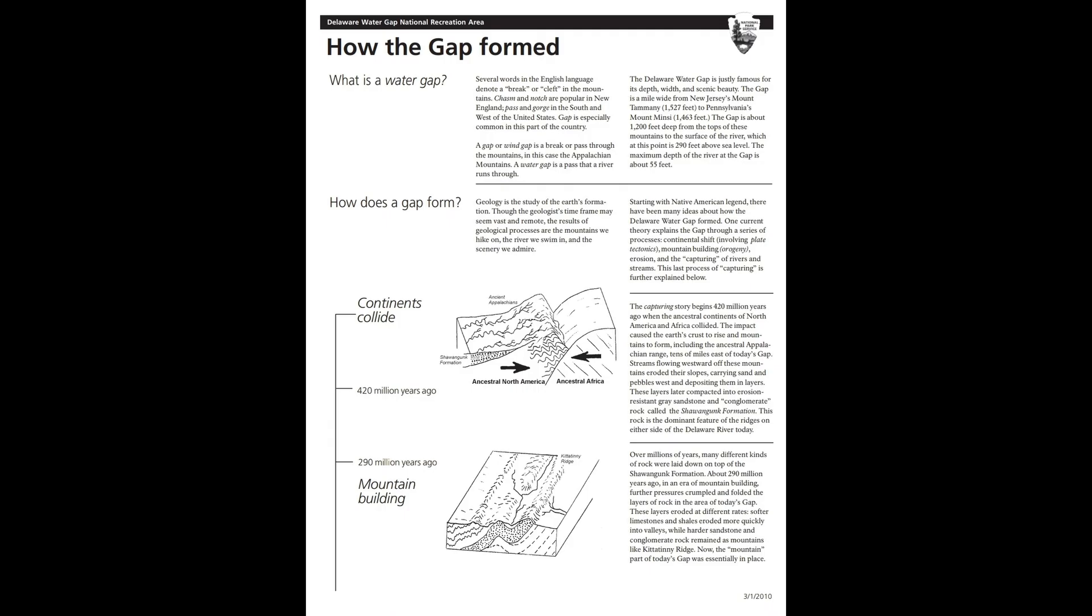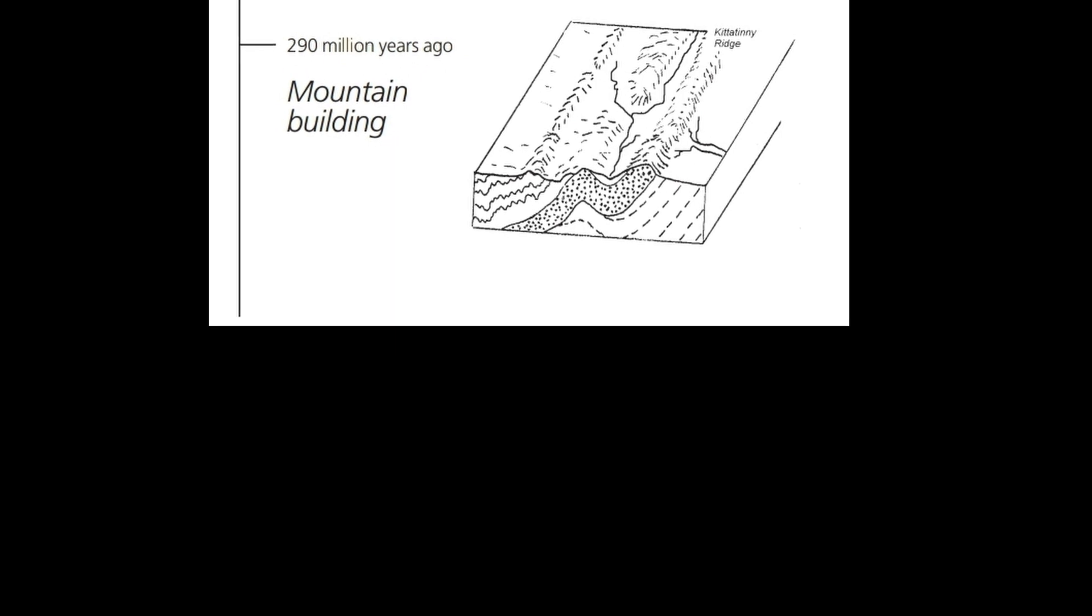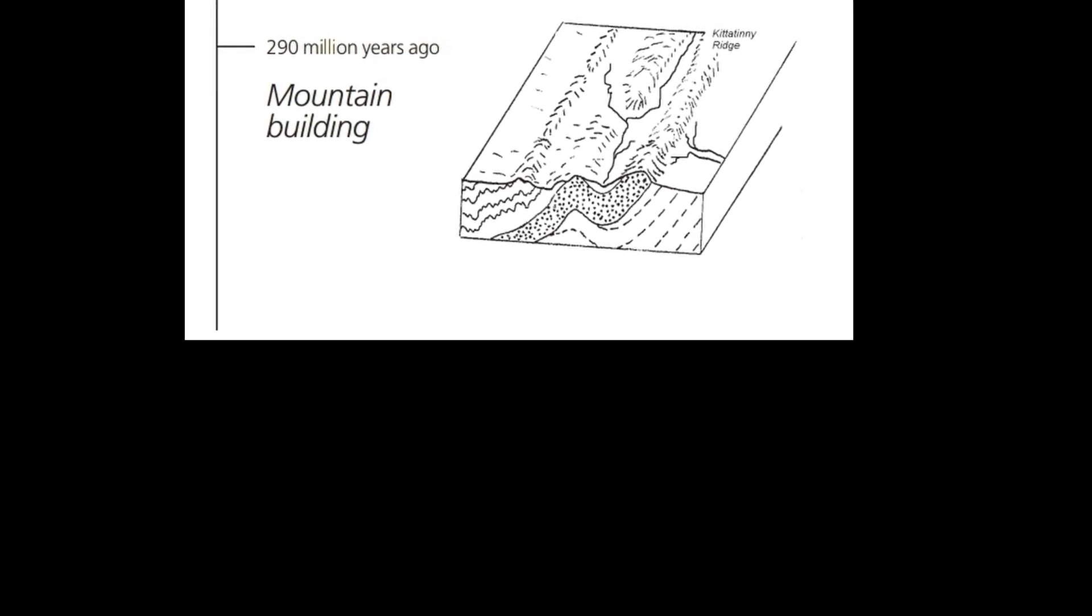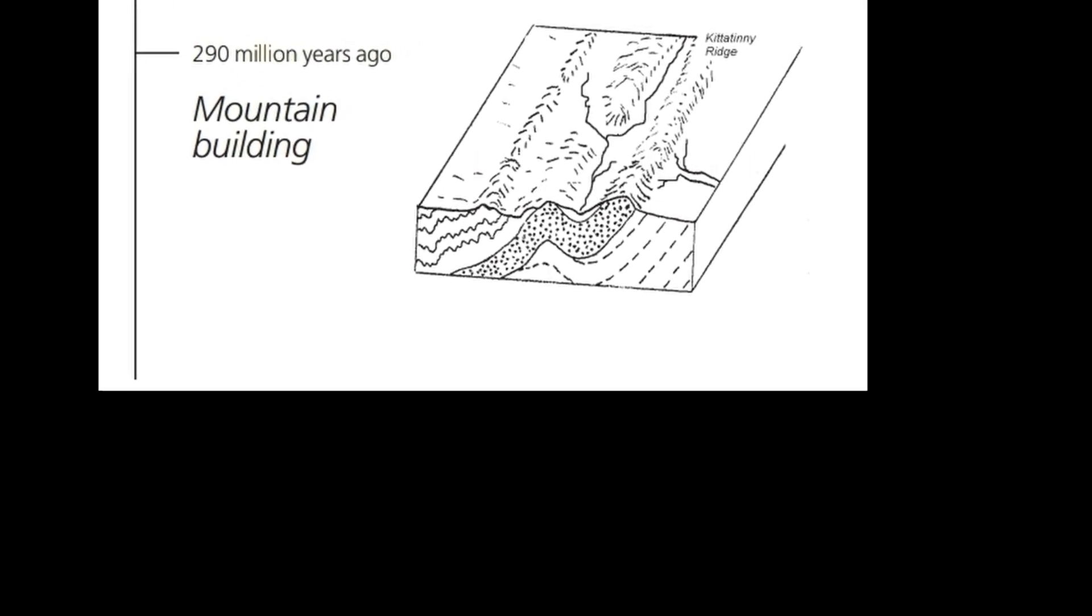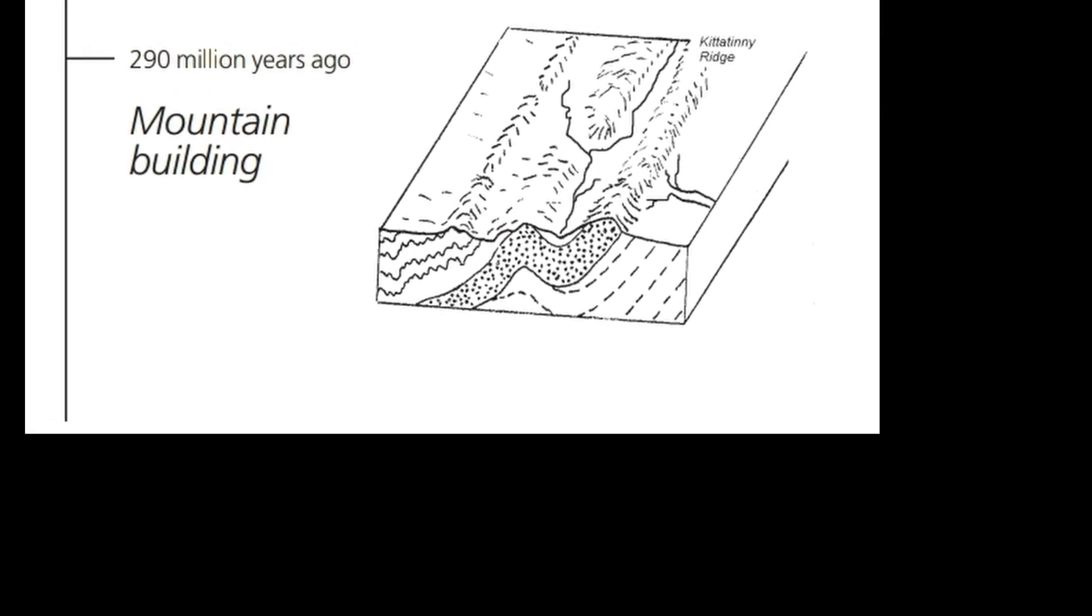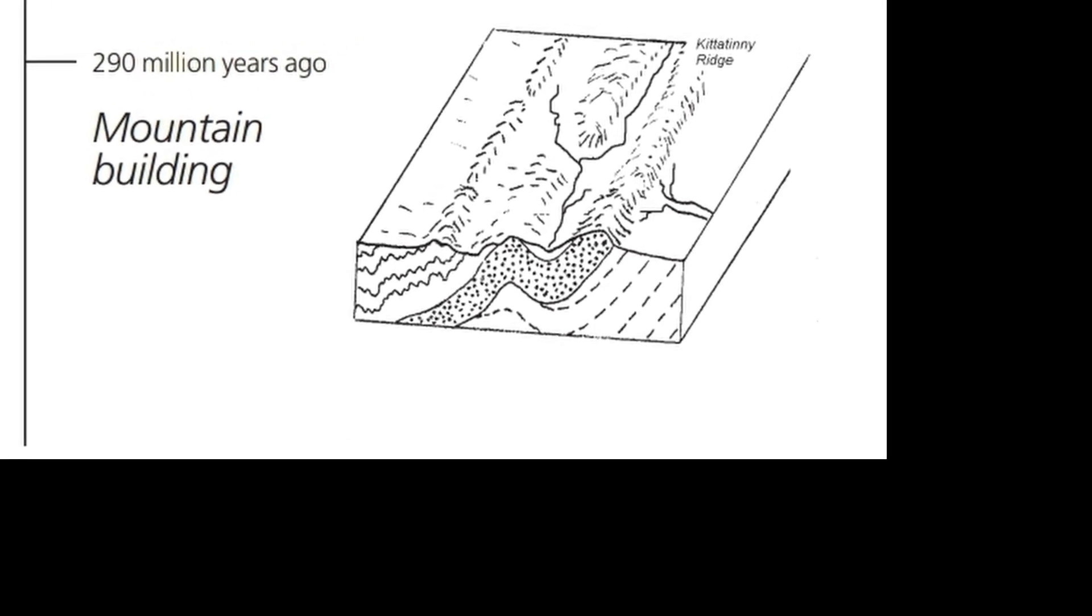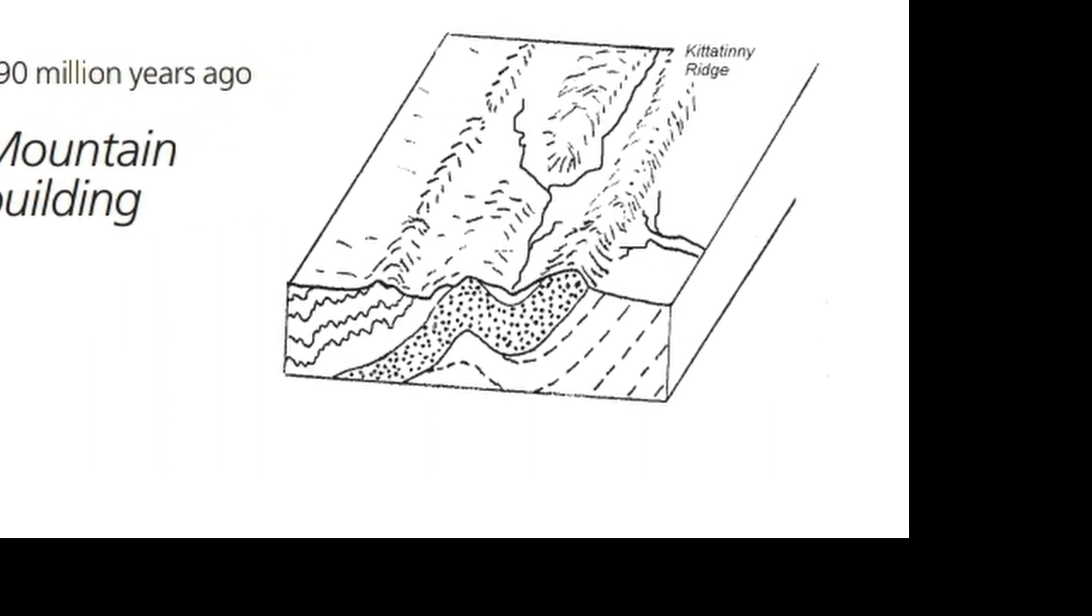Over millions of years, many different kinds of rock were laid down on top of the Shawangunk formation. About 290 million years ago, in an era of mountain building, further pressures crumpled and folded the layers of rock in the area of today's gap. These layers eroded at different rates. Softer limestones and shales eroded more quickly into valleys, while harder sandstone and conglomerate rock remained as mountains like Kittatinny Ridge. Now the mountain part of today's gap was essentially in place.